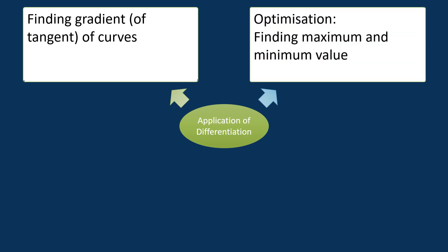Optimization. Differentiation is also used in optimization problems. For example, a company might use differentiation to find the maximum profit it can make by producing a certain number of products, while taking into account factors such as the cost of production and the demand for the product.